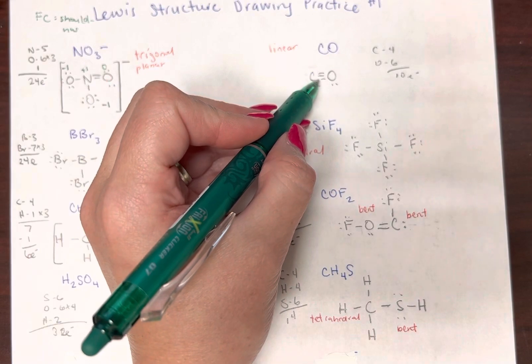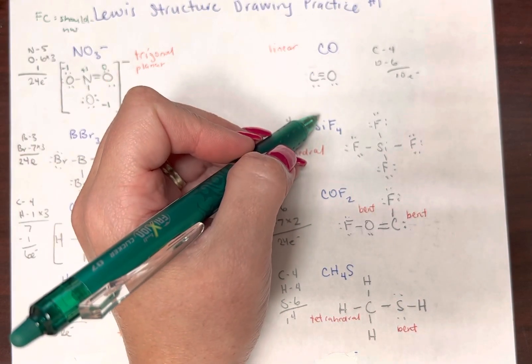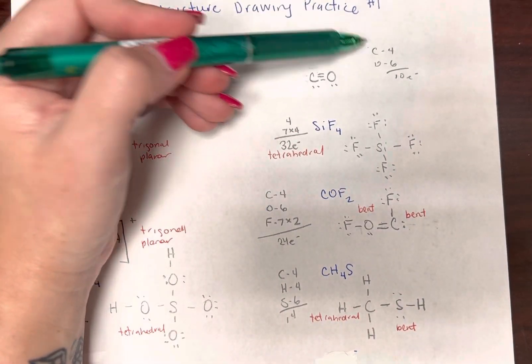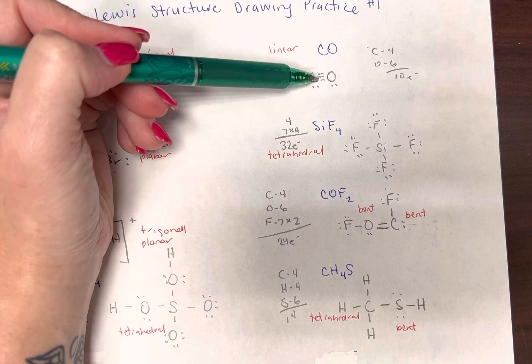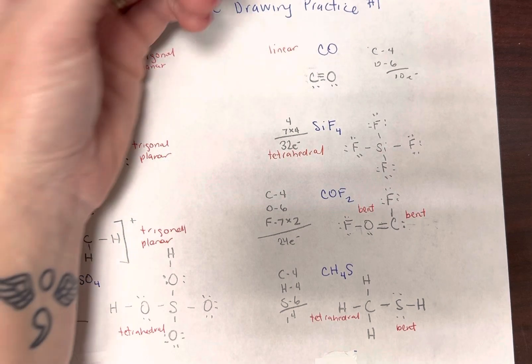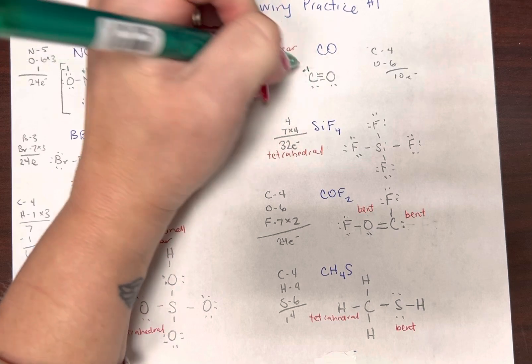But now let's look at this one, the carbon monoxide molecule. Carbon brings in four, and it has one, two, three, four, five. Four minus five is negative one.